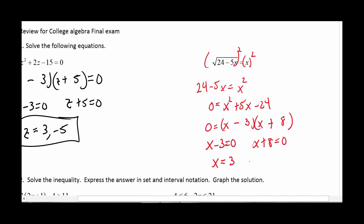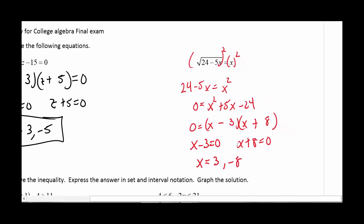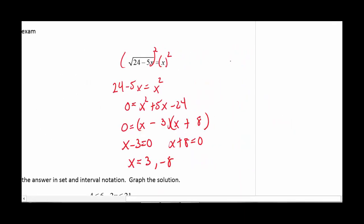And again, before I get too excited here, I do want to check and make sure that both of those are actually valid answers. So I'm going to evaluate this at 3 first. So 24 minus 15. I get 9. And yeah, we're good. So 3 is a good number.